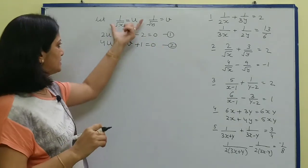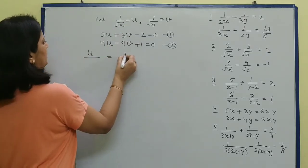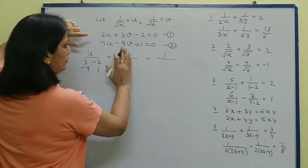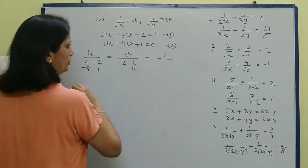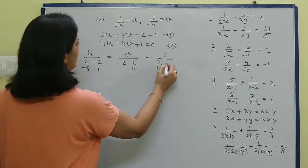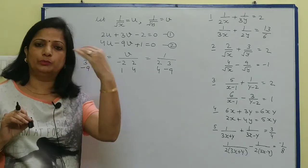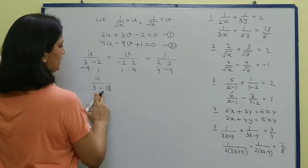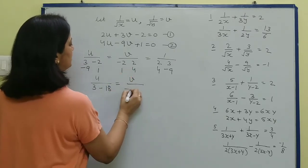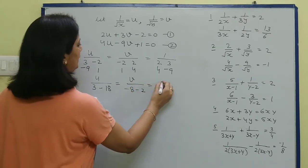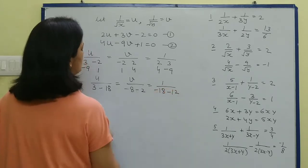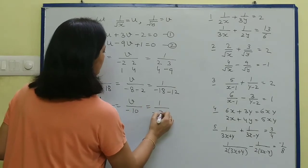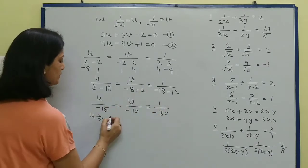Once these are in standard form, we directly apply cross multiplication. For u's column (u not counted): 3, -9, -2, 1. For v's column (v not counted): -2, 1, 2, 4. For 1's column (constants not counted): 2, 4, 3, -9 — note the minus signs are also counted. Solving: u upon = 3×1 - (-9×(-2)) = 3 - 18 = -15. V upon = -8 - (-2) = -10. And 1 upon = 9×2 - 4×3 = 18 - 12 = -30.